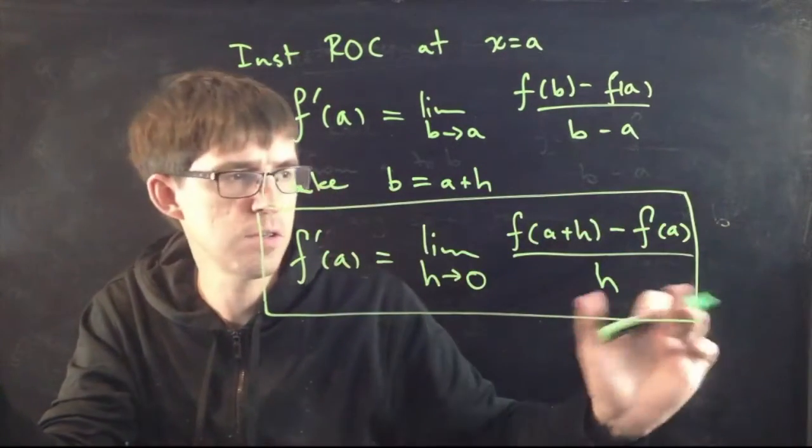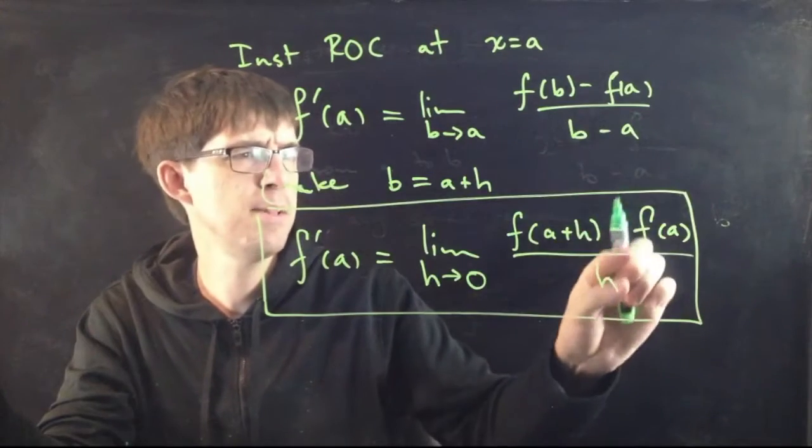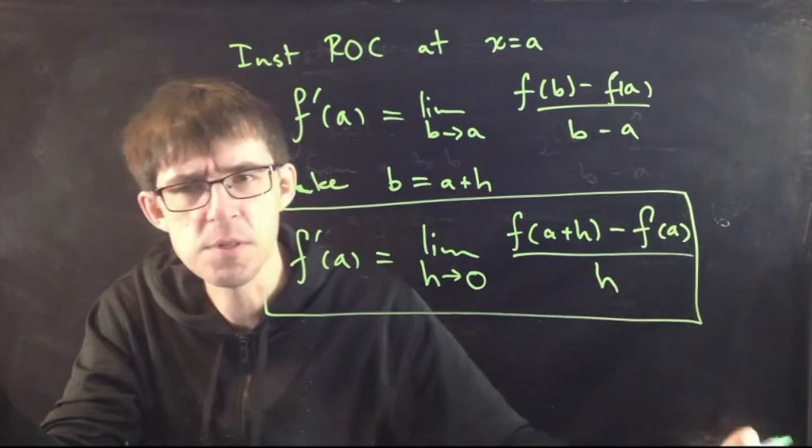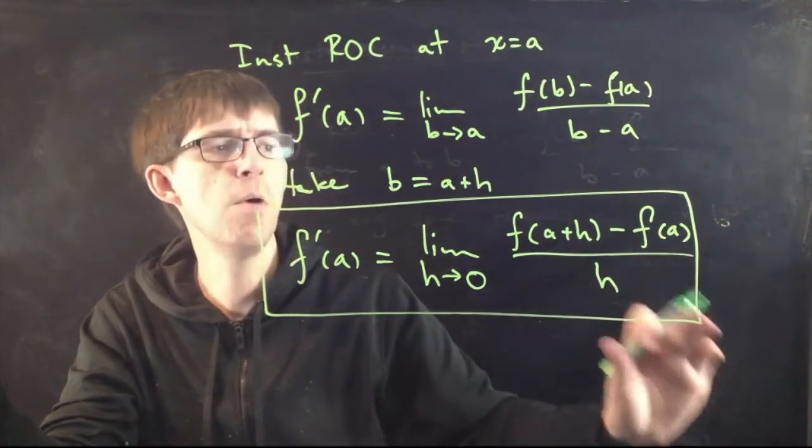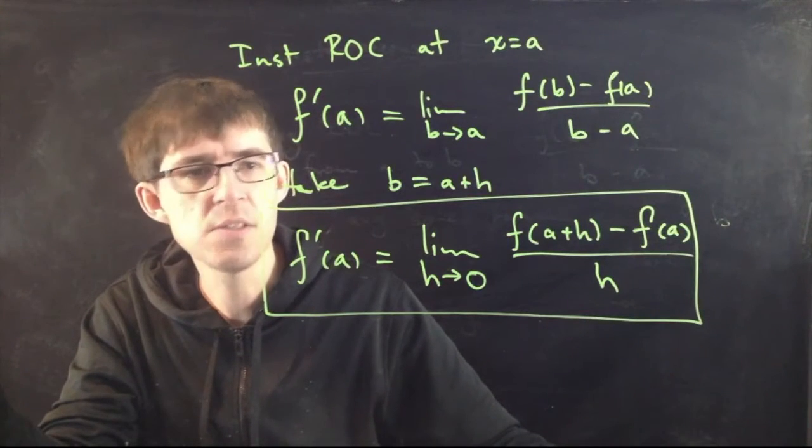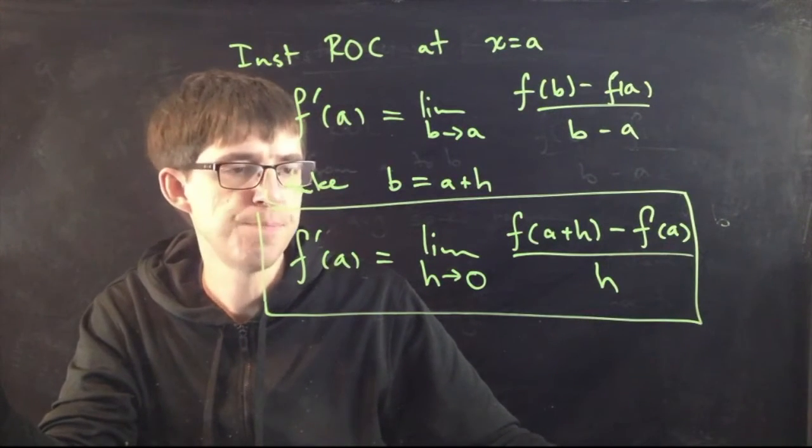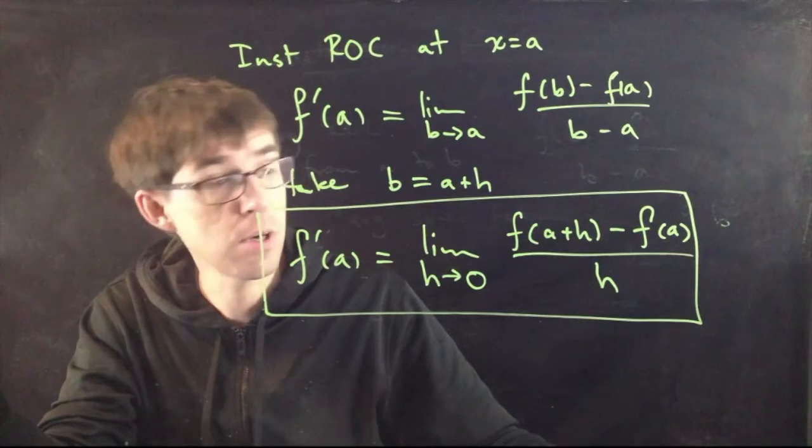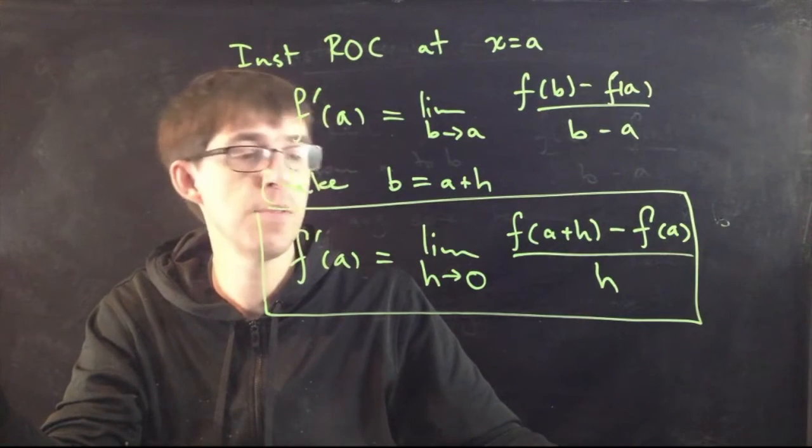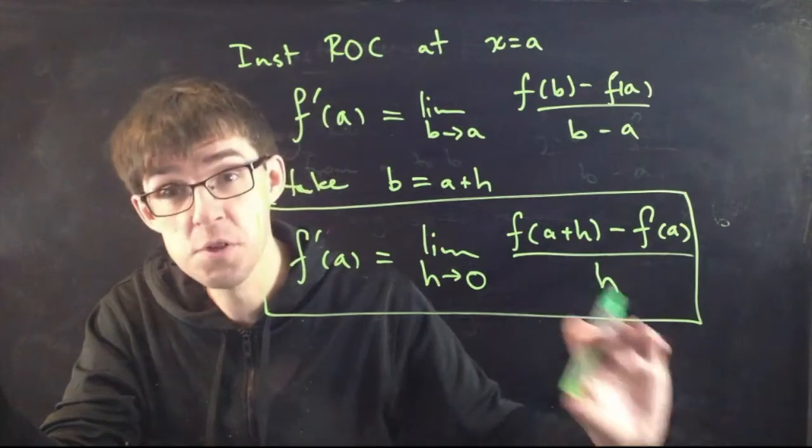So this is the formula that we are most often going to use. You can use either formula, but it turns out this second one is a little easier to handle. So this is the formula for the instantaneous rate of change. It's a major concept that we're going to be talking about for the next few weeks, also known as the derivative.